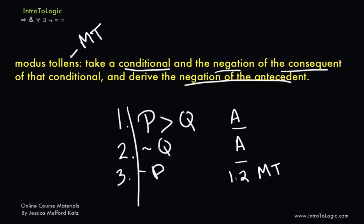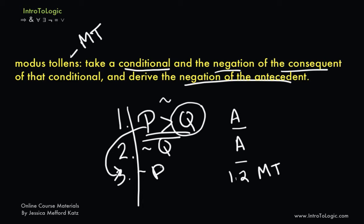Notice that we started with a conditional and took the negation of the consequent of that conditional — in this case, the negation of Q is 'not Q'. The negation of a sentence is always that sentence with a further negation sign in front of it. Using the conditional and the negation of the consequent, we've derived the negation of the antecedent, so the negation of P is 'not P'. And that's what we derive.